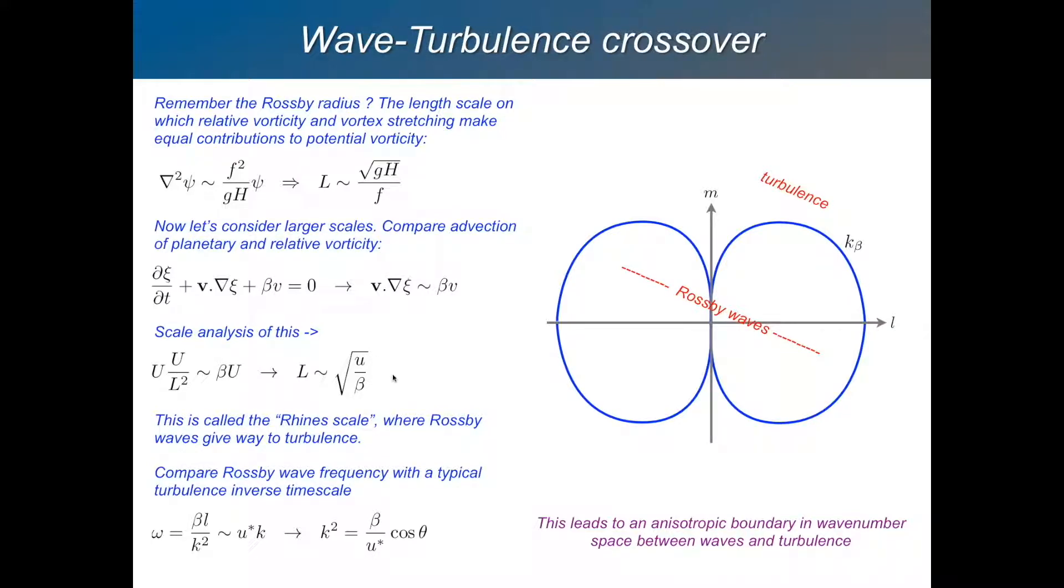This is very similar to the equatorial radius, which was the square root of the gravity wave speed divided by beta. This time it's the square root of the actual flow speed divided by beta. That is called the Rhein's length.